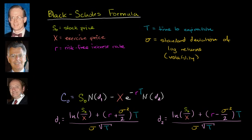And this is Bob Merton, who really took what Black-Scholes did and took it to another level to get to our modern interpretations of the Black-Scholes model and formula. All three of these gentlemen would have won the Nobel Prize in economics, except for the unfortunate fact that Fisher Black passed away before the award was given.